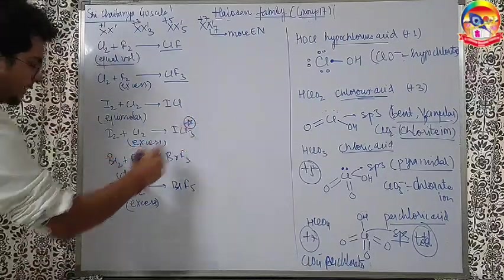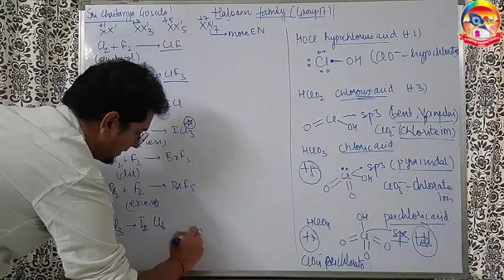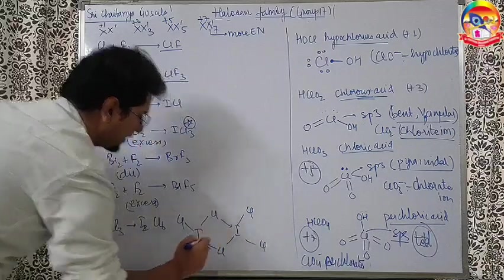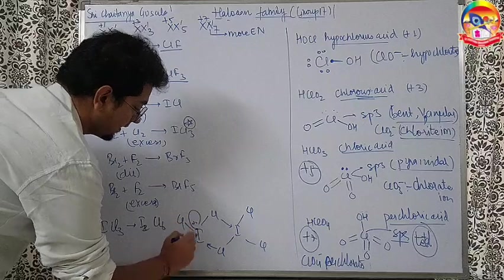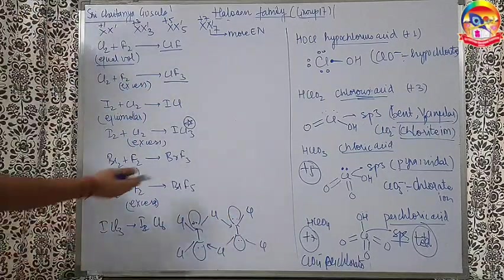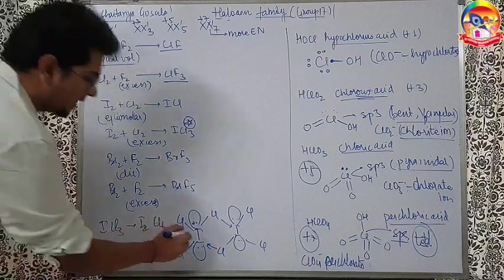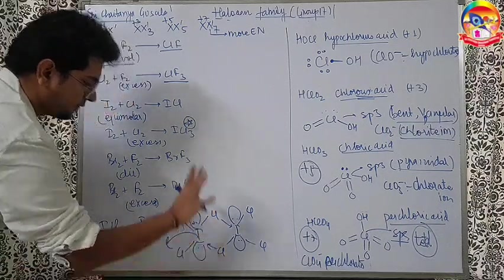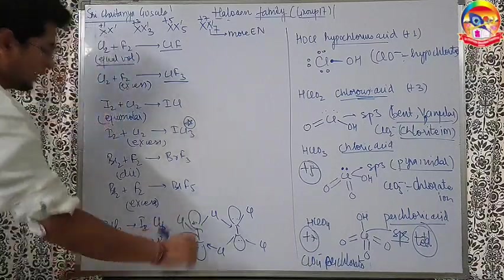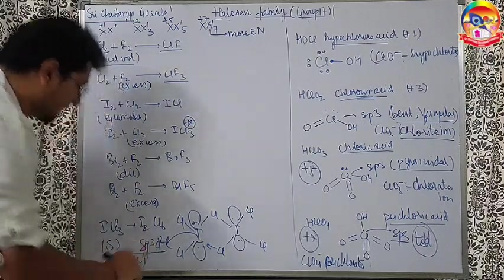ICl3 exists as a dimer, that is I2Cl6. It will appear like the AlCl3 kind of a structure, but there is a huge difference. There are 2 lone pairs each on the iodine. So you have to understand it is not like AlCl3. Structure looks like this if you ignore the lone pair, but lone pairs are also there. So understand the hybridization is different. 4 sigma bonds, 2 lone pairs. So steric number 6. So SP3D2 is the hybridization of the iodine here in the dimer form. ICl3 is an orange color solid who exists as dimer.